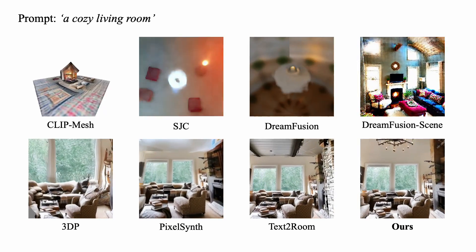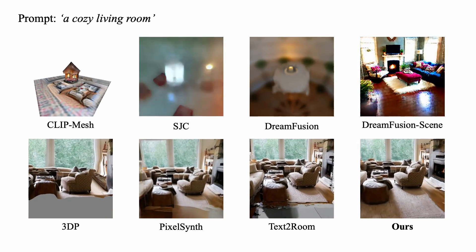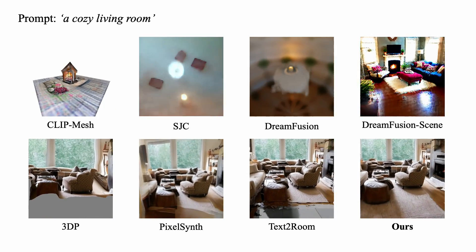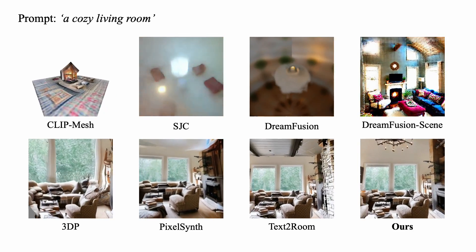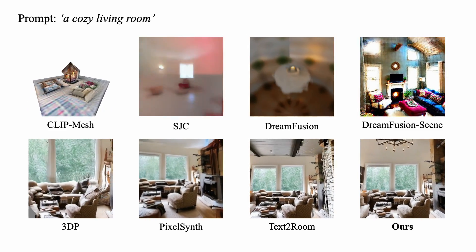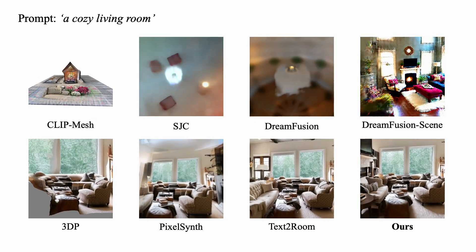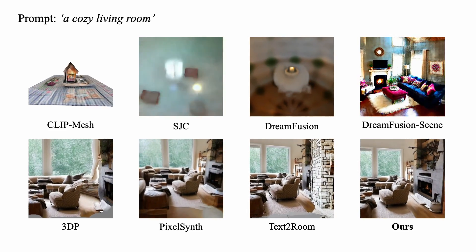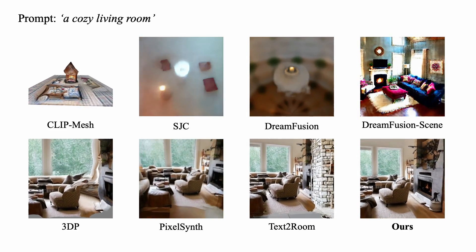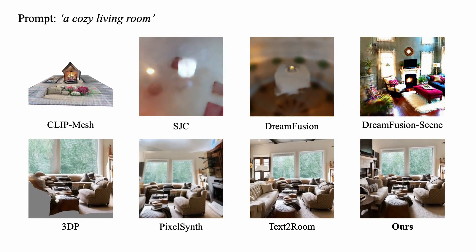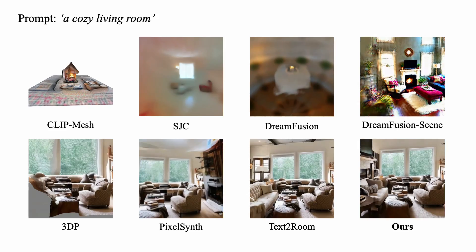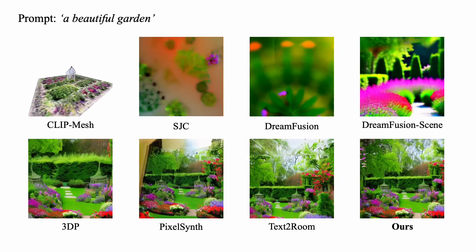To evaluate the performance of our method on text-driven 3D scene generation, we compare our method with seven baseline methods, including three existing state-of-the-art text-to-3D methods — ClipMesh, SJC, and DreamFusion — one modified version of DreamFusion for 3D scene generation called DreamFusionScene, two novel view synthesis methods from single image — 3DP and PixelSynth — and one recently arxiv-published concurrent work, Text2Room.